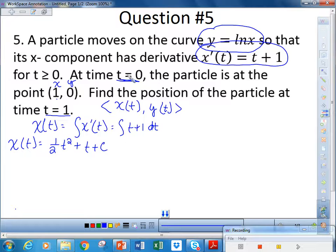So from this we get x of t is equal to 1 half t squared plus t plus c. Our initial condition tells us that when t is equal to 0, x is equal to 1. So we're going to replace those values and we get that c is equal to 1.